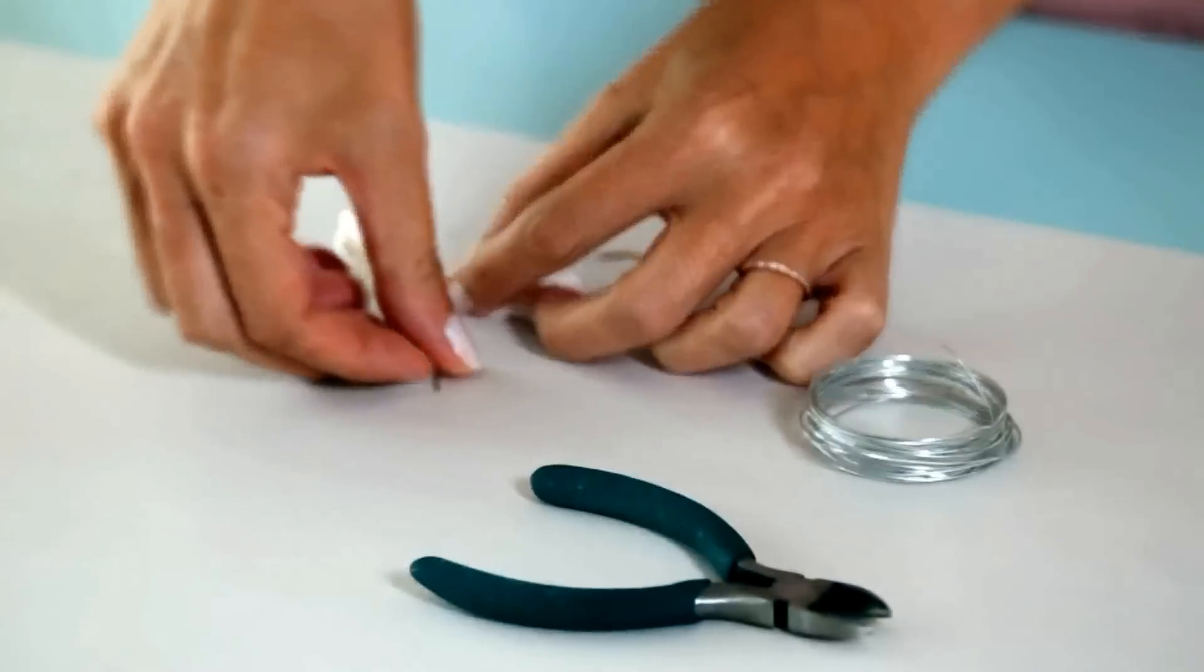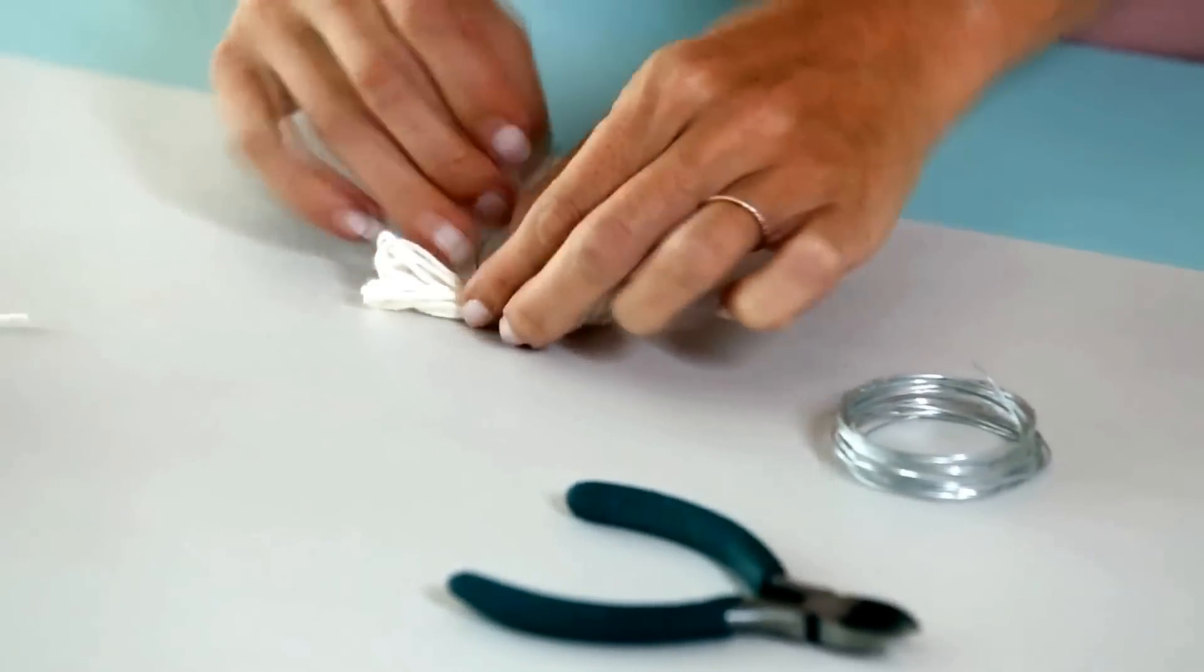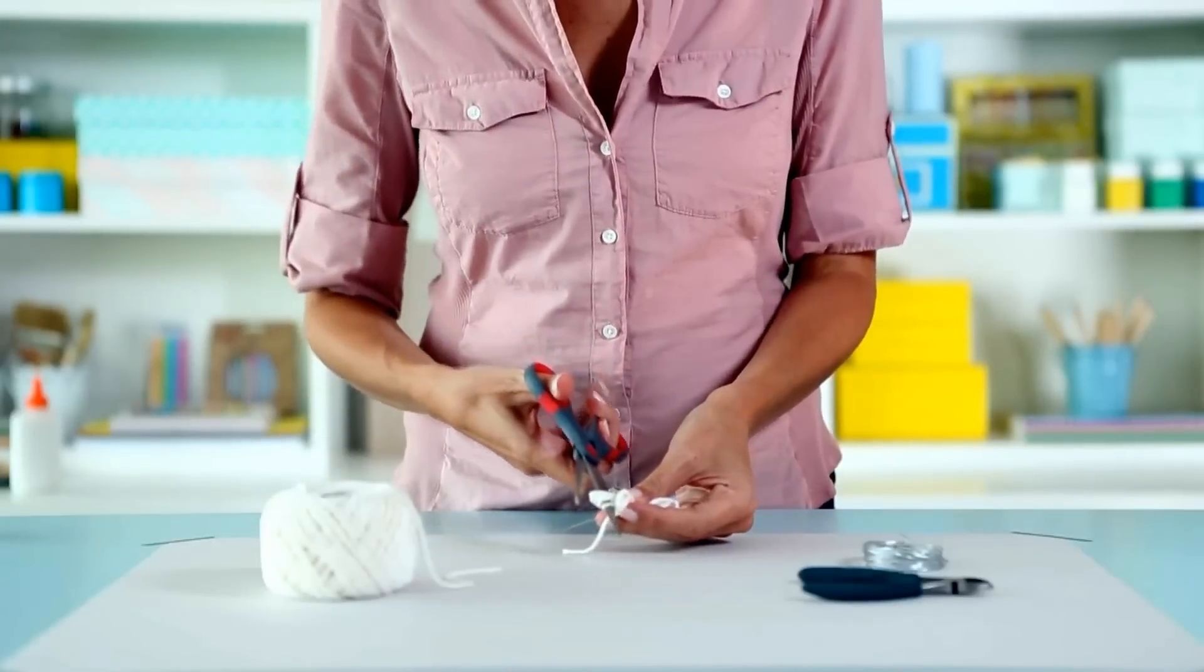Line up the yarn in the center of the wire and twist a small loop around the yarn. Snip the loops of the yarn.